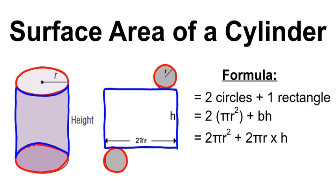The formula would be 2 times pi r squared, which accounts for both circles, plus base times height, which accounts for the rectangle. So the formula would be 2πr² plus 2πr times h.